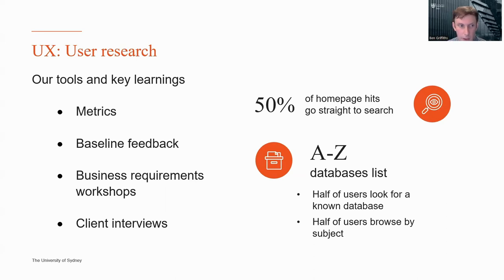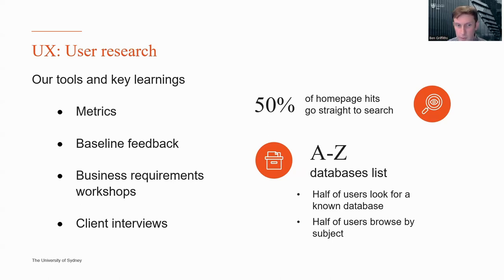We also collected some baseline feedback. We had a widget embedded in all the key pages on the old website for a period of months — basically emojis that users could click to indicate their sentiment about a page. If they responded, it would prompt them to provide more information. We got about 4,600 responses to that, which was fantastic — a lot of good qualitative and quantitative data. One of our learnings was around our A to Z databases list, our second most popular page after the homepage. About half of users were looking for a known database, so they could potentially be searching rather than scrolling through a list, and about half were browsing by subject. So we built our new browse section around that use case.